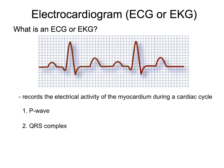Finally, the last part of an EKG is called the T-wave. The T-wave represents the repolarization of the ventricles, and during repolarization of the ventricles, the ventricles are relaxing.